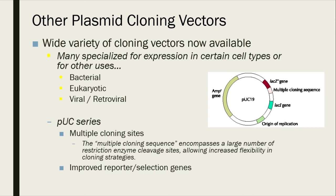There are other vectors — for example, the pUC series, quite commonly used. In addition to the antibiotic resistance gene for selection, they also have different genes such as the LacZ gene, responsible for metabolizing lactose in the organism. This will help confirm proper insertion of your DNA molecule.